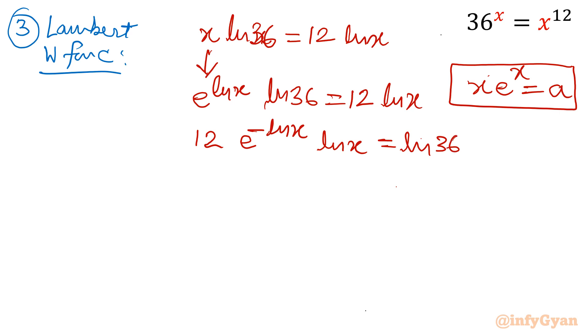Now it is coming into the form, you can notice. See this function is looking like x. This is e raised to the power x. Only sign is not matching. First we will divide both sides by 12. So it will become ln x times e raised to the power minus ln x equal to ln 36 over 12.